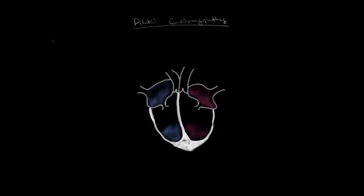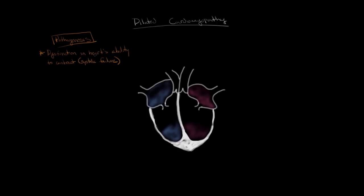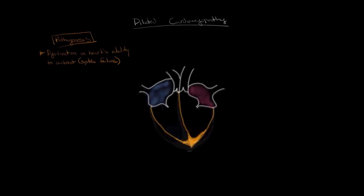Now that we've reviewed the normal cardiac cycle, let's get into the pathogenesis of dilated cardiomyopathy — how this disease develops. Dilated cardiomyopathy is caused by a dysfunction in the heart muscle's ability to contract. Since this involves the contracting phase, which we called systole, this is known as a systolic failure. The heart muscle is kind of thin — the walls of the ventricles have gotten thinner — demonstrating that the muscle isn't able to contract as well.